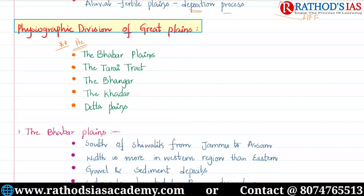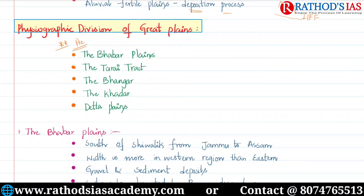The five physiographic divisions of the Great Plains are: first, Babbar Plains; second, Terai Tract; third, Bangar; fourth, Khadar; and fifth, Delta Plains. You have to remember these in order — Babbar, Terai, Bangar, Khadar, and Delta. Now let us see some important facts where you can get questions in the form of statements in prelims.